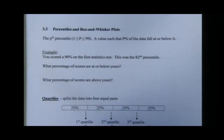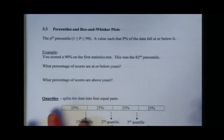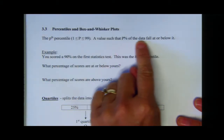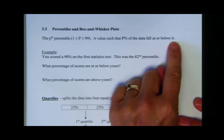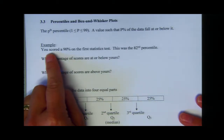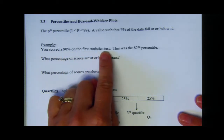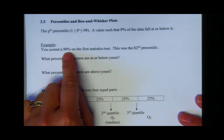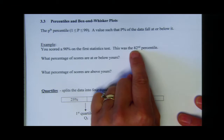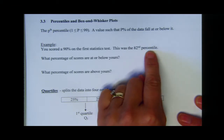Section 3.3 talks about percentiles and box and whisker plots. Percentiles are a value such that P percent of the data fall at or below it. For example, let's say you scored a 90% on your first statistics test — this was your score, recorded in the grade book — and you're also told that this was the 82nd percentile.